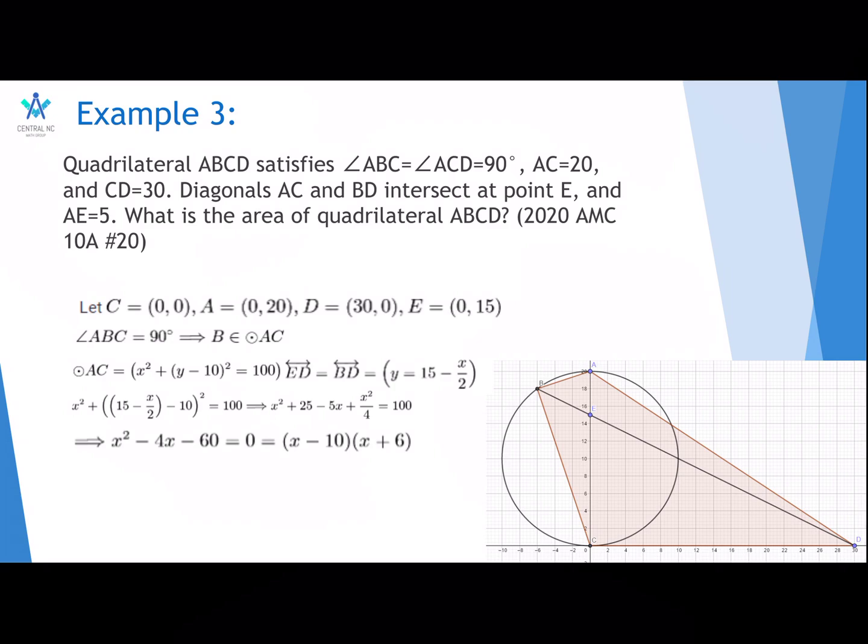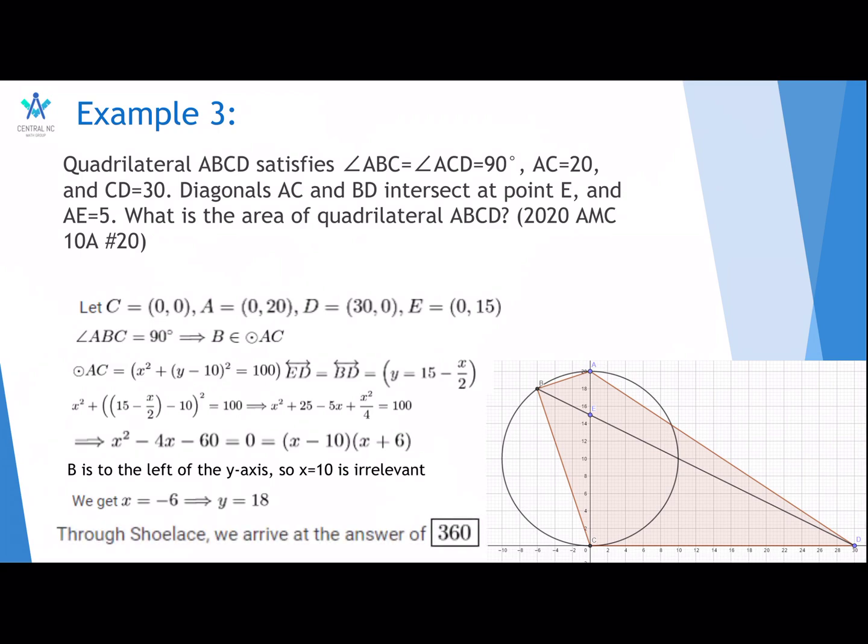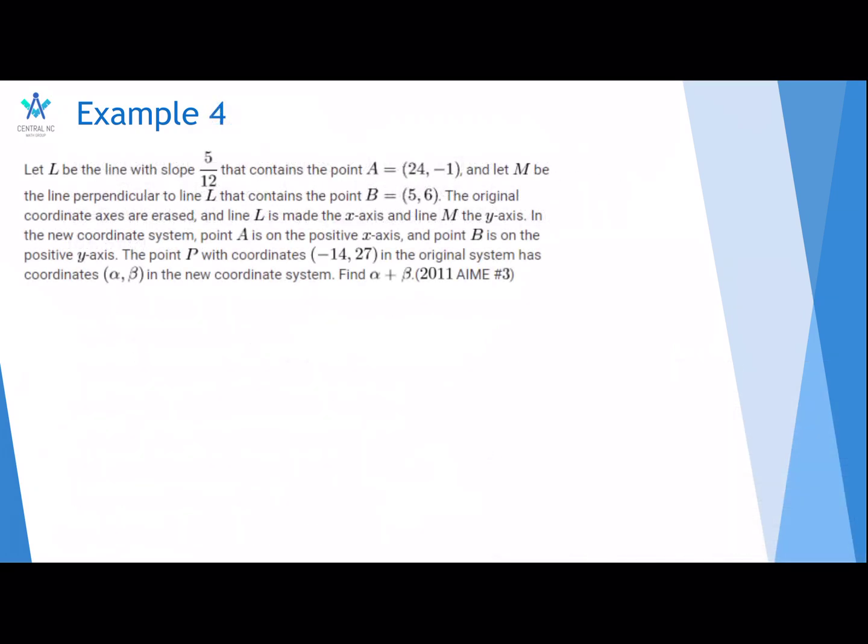From the drawing, you can clearly see that B is on the other side of D from line AC. So, 10 is obviously wrong. You just get that X is negative 6. So, Y is 18. And we use the Shoelace theorem again to find that the area of ABCD is 360.